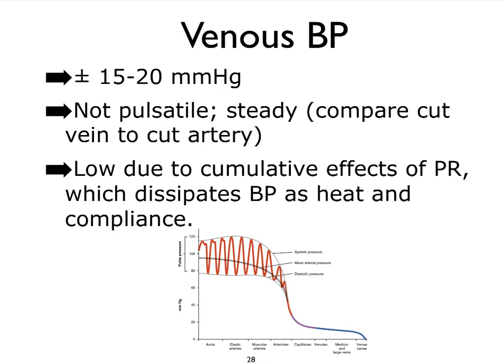Venous blood pressure, shown in blue on the graph, shows a continuous drop in mean arterial pressure. The cumulative effects of peripheral resistance dissipate blood pressure as heat and compliance. By the time we get to the vena cavi, their large lumens provide very little resistance and good compliance, so blood pressure drops to nearly zero just before reaching the atria — which must be at zero to maintain the pressure gradient between the veins and the heart.